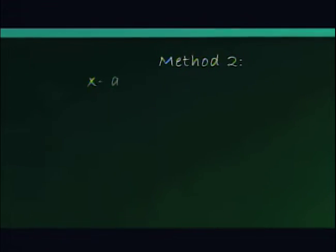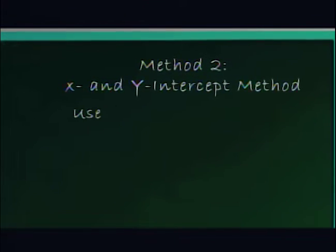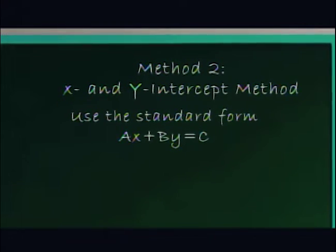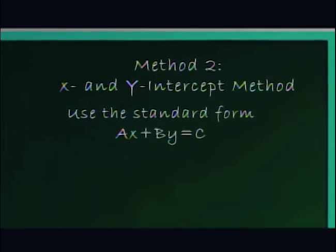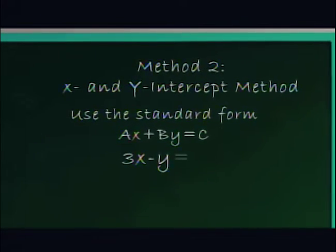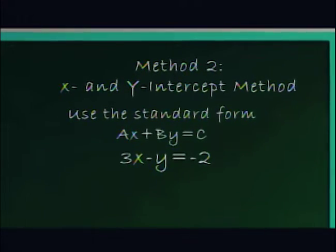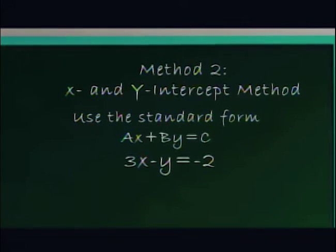The second method utilizes both the x and y intercepts. In this method, we do not need to rewrite the equation. In this example, we will use the original equation 3x minus y equals negative 2. Using this equation, we shall then identify both the x-intercept and y-intercept.